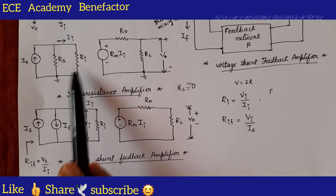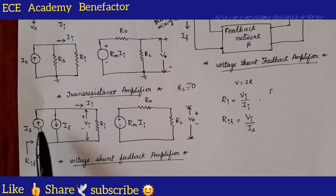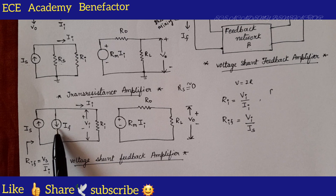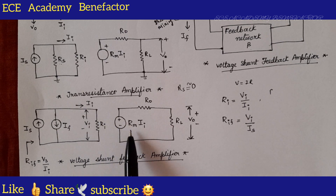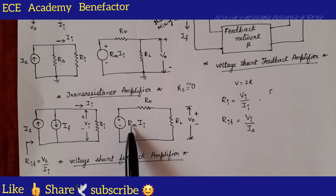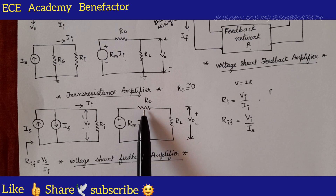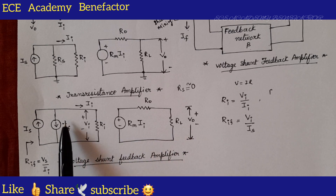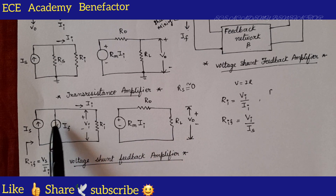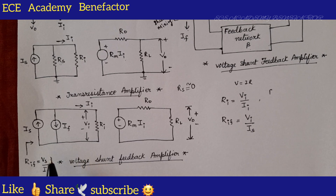So these two diagrams are the same with I-s, I-f, R-i — current I-i is flowing, and the voltage source is R-m times I-i with resistor R-naught and R-L. At the output side there is no change. Only at the input side, a current source I-f is placed. Now we are deriving R-IF.